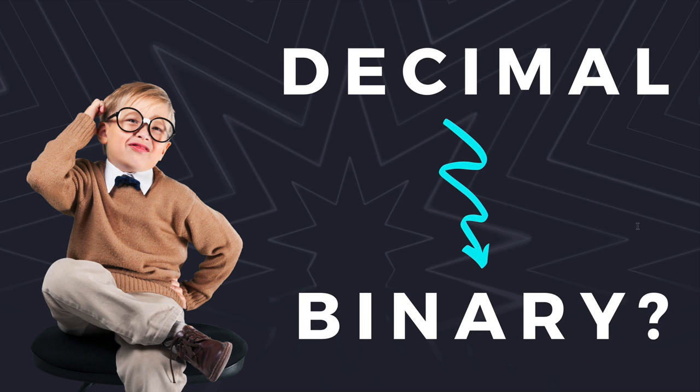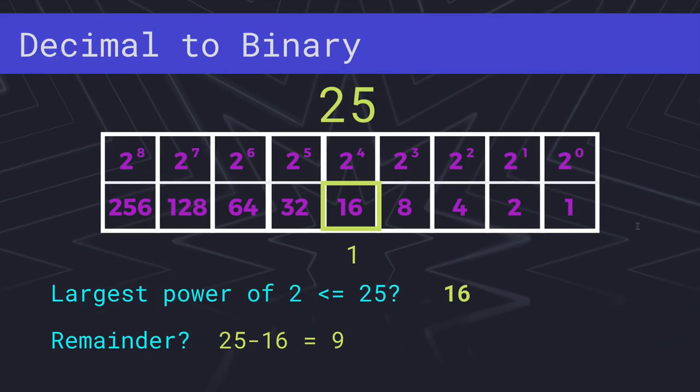Now what about going the other way around, from decimal to binary? Let's say we have a number like this, 25. The basic approach is to take your number and start by finding the largest power of 2 that is less than or equal to your number. So 25, the largest power of 2 is going to be 16. If we go to 32, that's too big. We need 16. So then we take that and we subtract. So what is 25 minus 16? That gives us 9. So now we have 9 left. We're going to put a 1 here, and then we have the value of 9 that we need to spread across the remaining 4 digits.